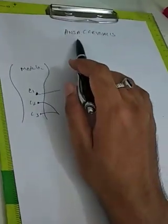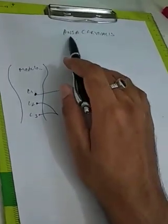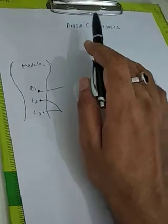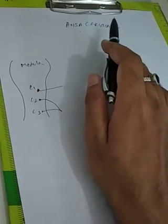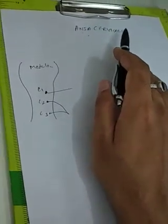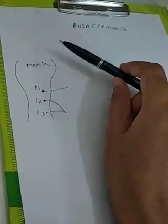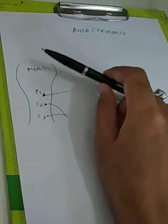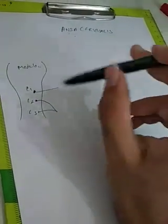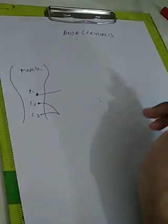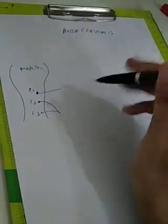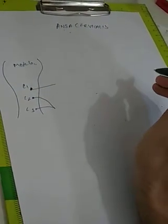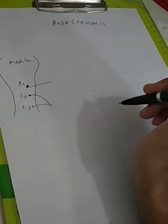Welcome everyone. Today we are going to discuss the most important topic: ansa cervicalis. Some students think this is very difficult, but I think this is very easy. It supplies all the infrahyoid muscles.